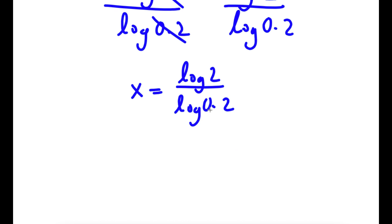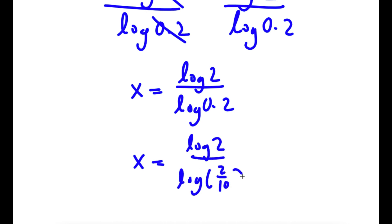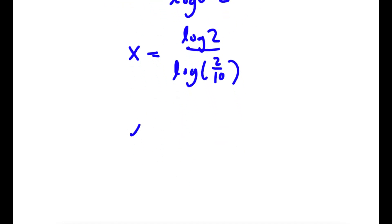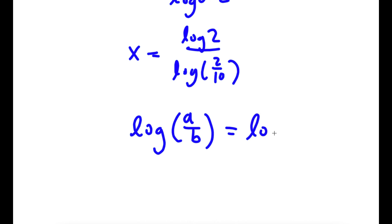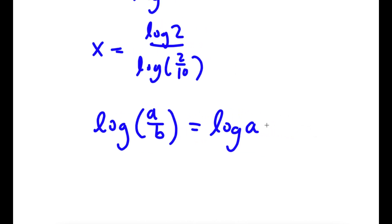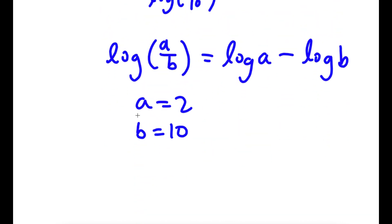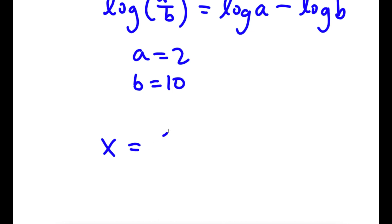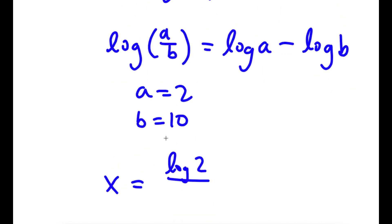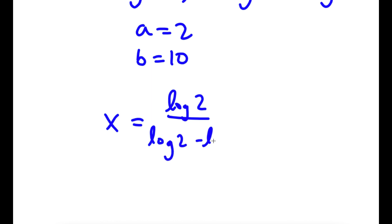Now, log 0.2 is the same thing as log of 2 over 10. If I have something in the form log a over b, this is simply equal to log a minus log b. So in this case, a is 2 and b is 10. I can rewrite this as x is equal to log 2 over log 2 minus log 10.